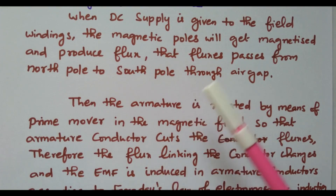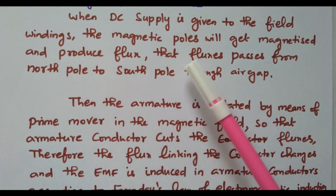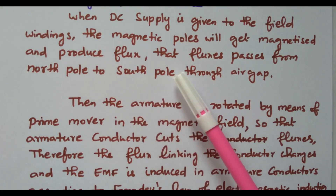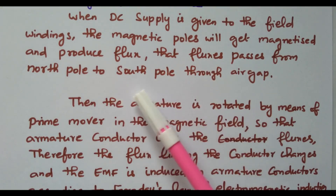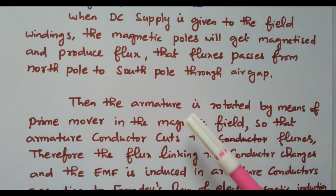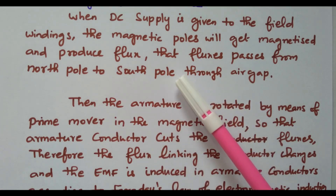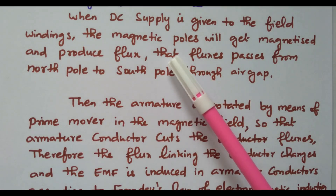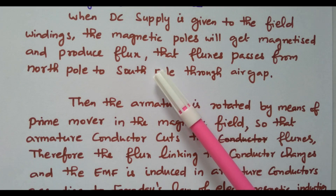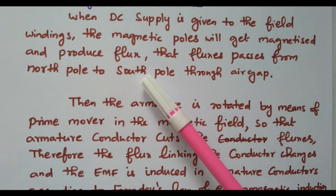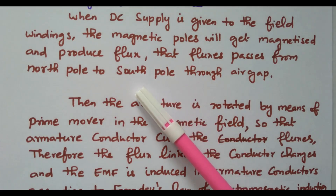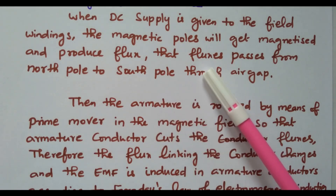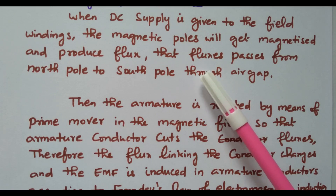When DC supply is given to the field winding, the magnetic poles get magnetized and produce the flux. That flux passes from the north pole to the south pole through the air gap. So the first step is giving the DC supply — excitation — to the field winding, so that the magnetic poles are magnetized and produce flux passing from north to south pole through the air gap. This is the stationary part: the field windings are magnetized.